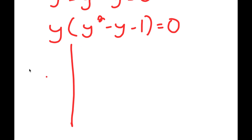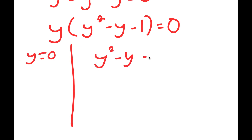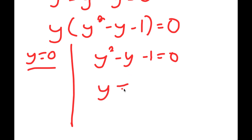This gives me two equations: y equals 0, and y squared minus y minus 1 equals 0. So y equals 0 is already a solution. For y squared minus y minus 1 equals 0, using the quadratic formula, you get y equals 1 plus or minus the square root of 5, all over 2.